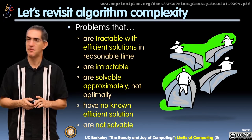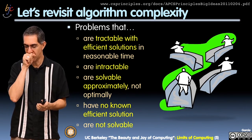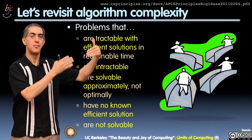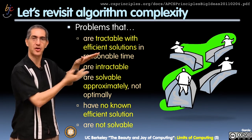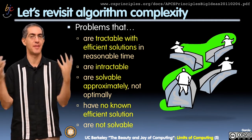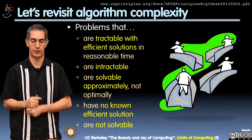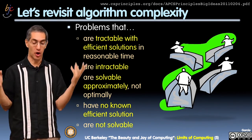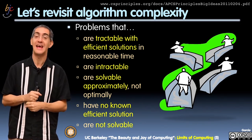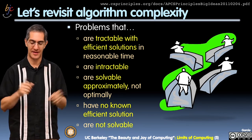We've talked about algorithmic complexity before in this class. We're talking about algorithms — these are problems that can be categorized into several categories, and we're going to talk about those in this lecture. This is a heads-up for what we're going to be doing in the next couple of videos. First: problems that are tractable with efficient solutions in reasonable time. We love these — these are the simple, easy ones.